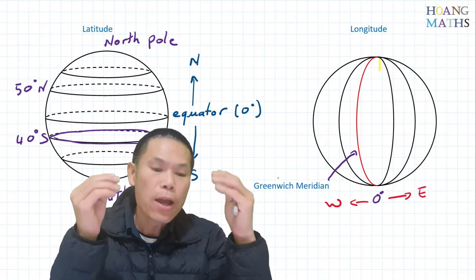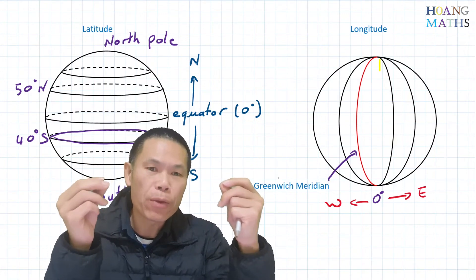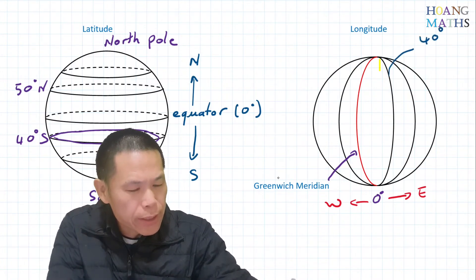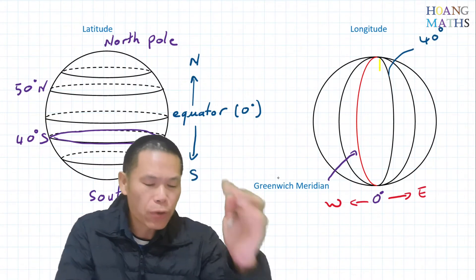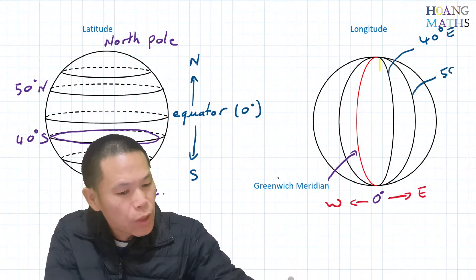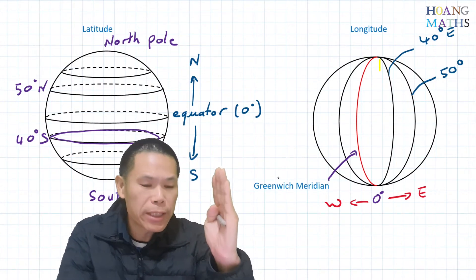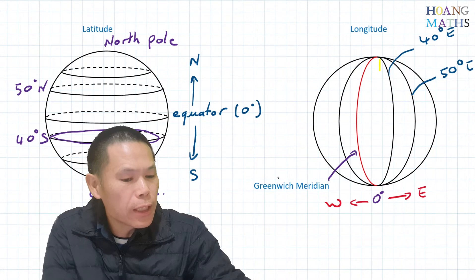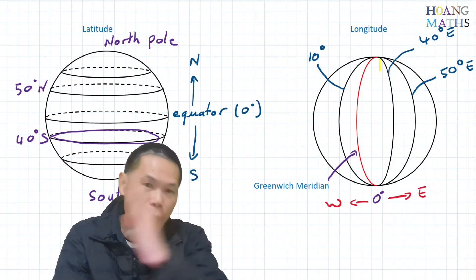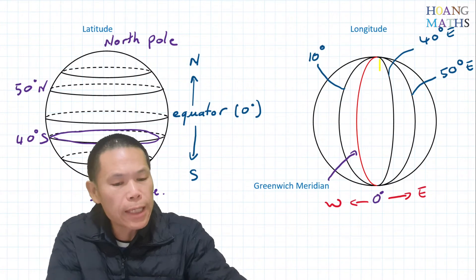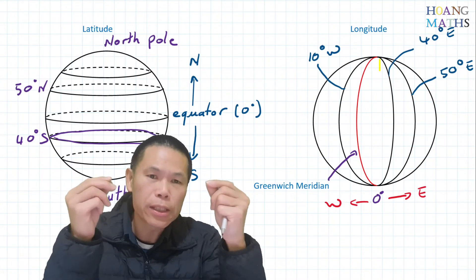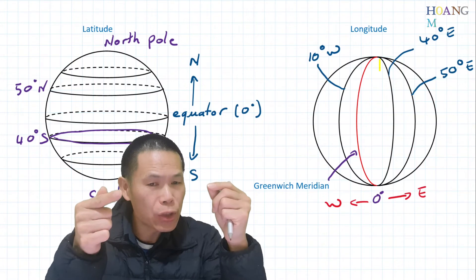Longitude tells you how far the angular distance is away from the Greenwich meridian. For example, let's say this one here is 40 degrees — because it's on the right hand side of the Greenwich, it should be east. Let's say this is 50 degrees — because it's on the right hand side of the Greenwich meridian, it should be 50 degrees east. And let's say this one here is 10 degrees but it's on the left of the Greenwich meridian, so it should be 10 degrees west.